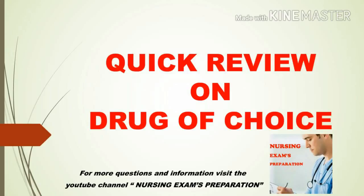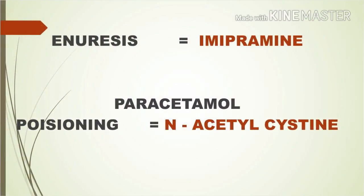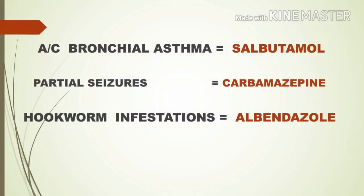Firstly, in case of enuresis, imipramine is the first drug of choice. Imipramine is an antidepressant of the tricyclic antidepressant group. N-acetylcysteine is the drug of choice for paracetamol poisoning. The drug of choice in acute bronchial asthma is salbutamol, which is a bronchodilator.